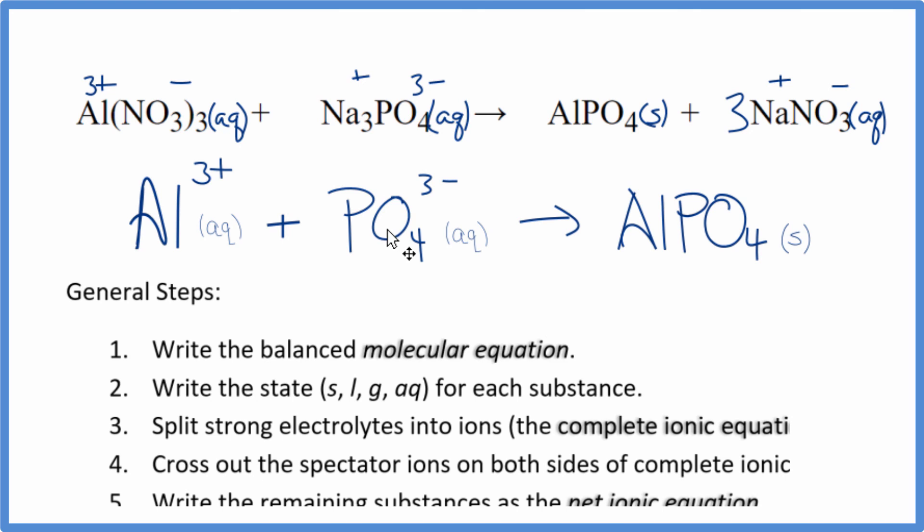This is Dr. B with the balanced net ionic equation for Al(NO3)3 plus Na3PO4. Thanks for watchin'.